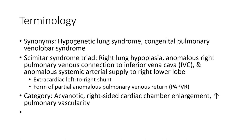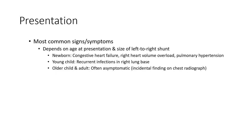Cardiac findings include hypoplastic right-sided cardiac chamber enlargement and increased pulmonary vascularity. The most common signs and symptoms depend on age, mode of presentation, and size of the left-to-right shunt. In newborns, congestive heart failure arises from volume overload and pulmonary hypertension. In young children, recurrent infections may occur, while older children and adults are often asymptomatic with incidental findings on imaging.